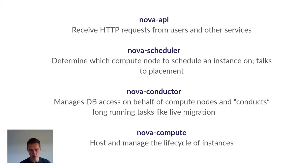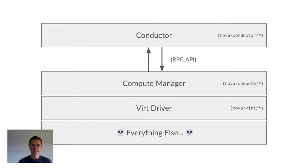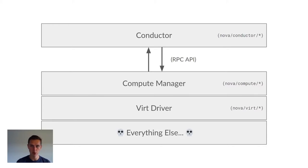The LibVirt driver is a subcomponent of the last of these — the compute service. But its usage has implications for both the API and the scheduler services, as well as the conductor service. Where LibVirt actually fits into this diagram is underneath the Nova Compute Service. The Nova Compute Service has a compute manager, and that is communicated with via an RPC API from the Nova Conductor Service, and in some cases other Nova Compute Services.